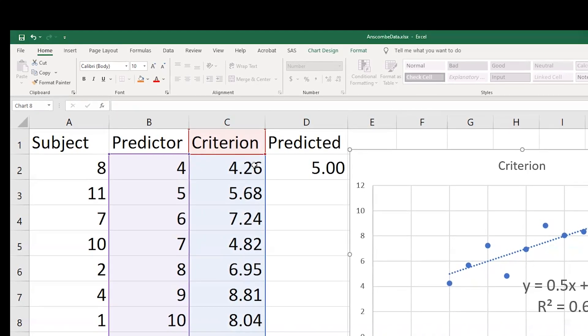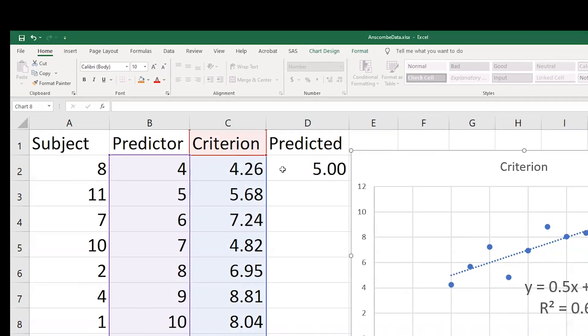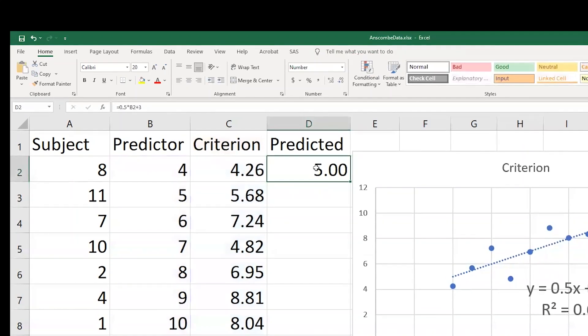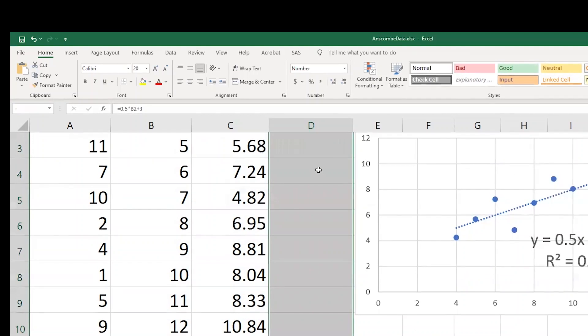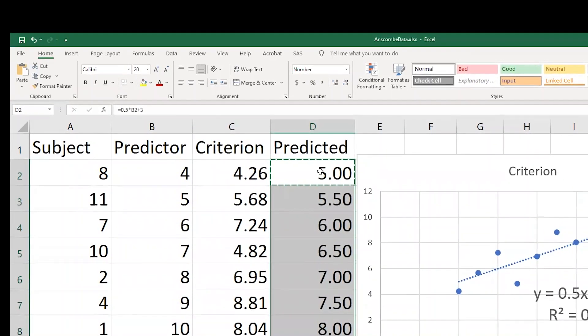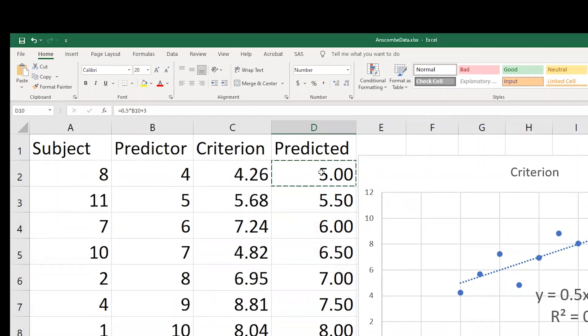In fact, they didn't get quite a 5. They got a 4.26. If I want to see the rest of the predicted values, I can copy this, that would be control C, and then control V and paste it all. And here are the predicted numbers for everybody.